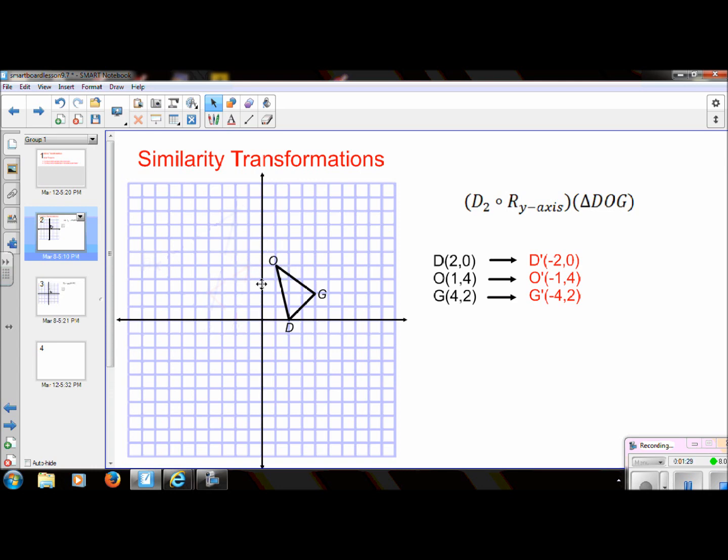But we just take the signs of the new quadrant that we are reflecting to. So if we reflect over the y-axis, we would end up right here, and the signs in this quadrant are negative positive. So these coordinates are the same, just all negative positive. And remember, we always do in a composition what is listed last first. So I did this, now I need to go over here and do a dilation.